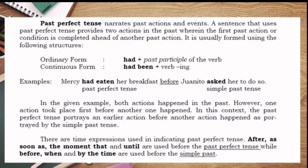While 'before,' 'when,' and 'by the time' are used before the simple past. The past perfect tense is also a past tense, but the difference is it's the action that was completed first before another past action happened. The structure is 'had' plus past participle form of the verb. For the verb 'eat': base form is 'eat,' past tense is 'ate,' past participle is 'eaten' — so we use 'had eaten,' not 'had ate.'